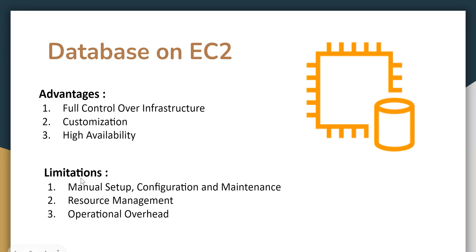However, hosting on EC2 has its own limitations. It still involves manual setup — you have to create the EC2 server, install your database, then configure and maintain it. There is also resource management: you have to scale up or down and manage the EC2 resources yourself. Operational overhead remains, as you have to apply patches, software updates, and security patches yourself, which requires skill and time.